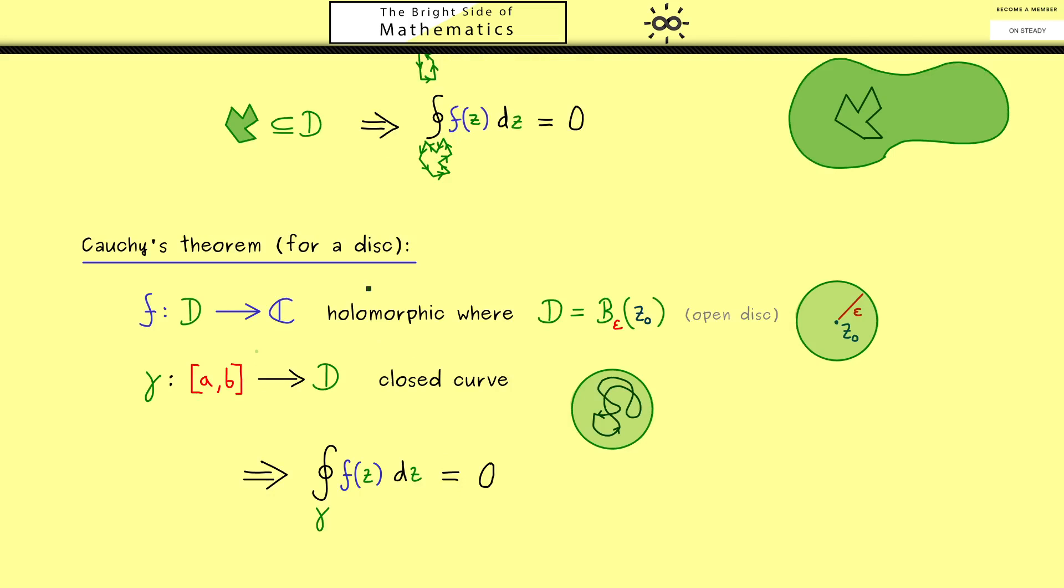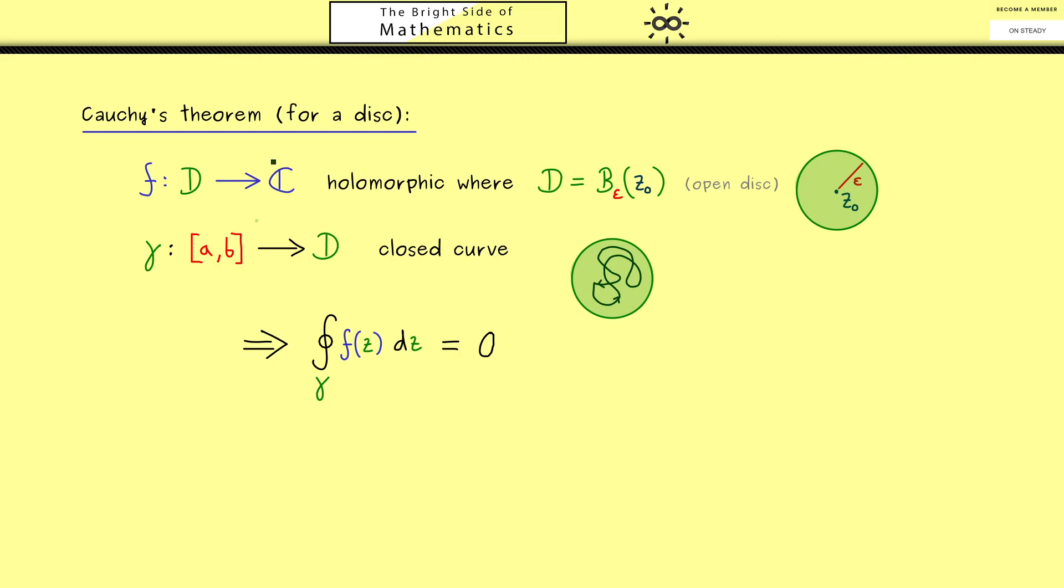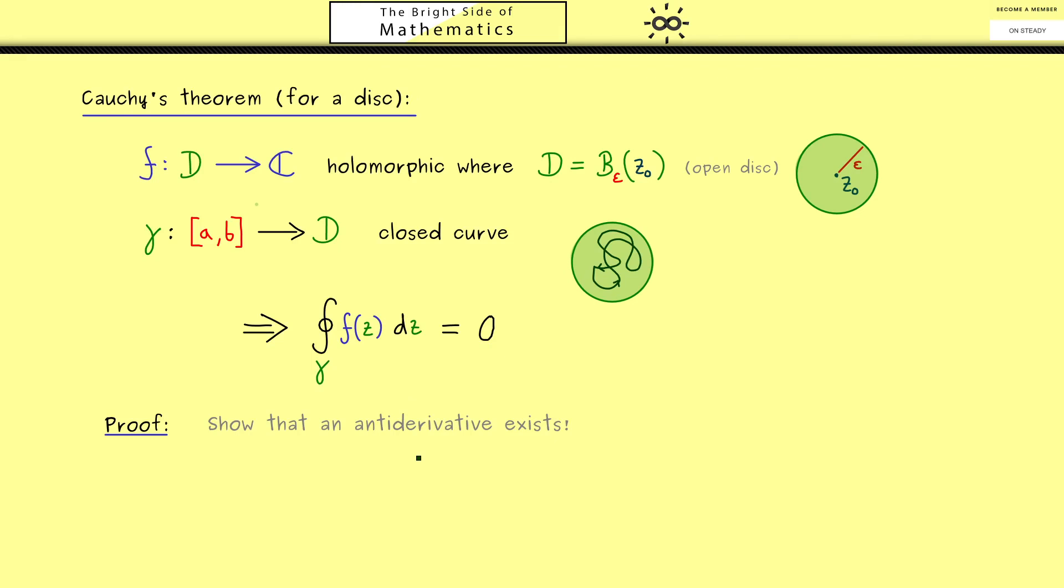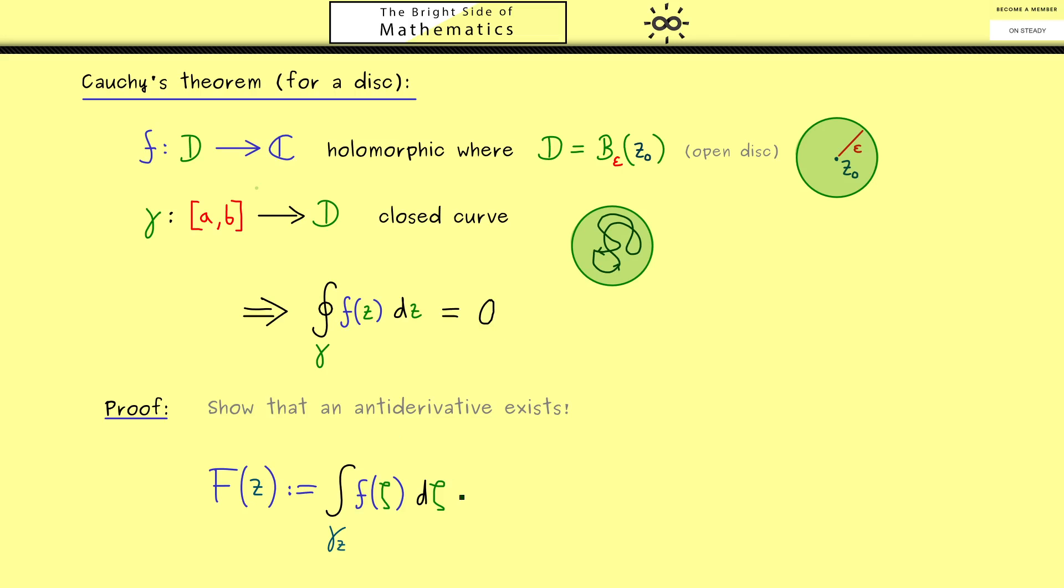Hence, you should see, for this special domain, this generalizes the result we had above. Because here the contour integral is 0 for every possible shape the curve gamma can take. Even if it's not a polygon. So for example, also a circle inside the domain here would work. Ok, now of course, you want to ask about the proof of this nice statement here. And in fact, it turns out here that all the ideas we need for the proof, we have already discussed in the last two videos. More concretely, we will show that an antiderivative of f exists.